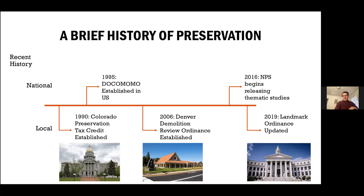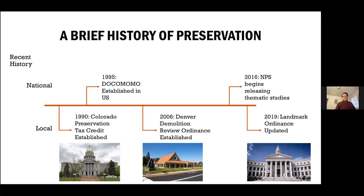In 1995, Docomomo was established — the International Organization for the Committee for Documenting and Conserving Buildings, Science and Neighborhoods of the Modern Movement. In the 90s, we're starting to see a shift away from just colonial architecture and history on the East Coast and Victorian and early 1900s history here in Denver, to seeing the importance of buildings from the modern movement. For instance, Denver in 2019 designated Cable Land, which was our first postmodern landmark, actually built in 1986. So history is kind of nipping at our heels, and things that may not seem so far away are really historic.